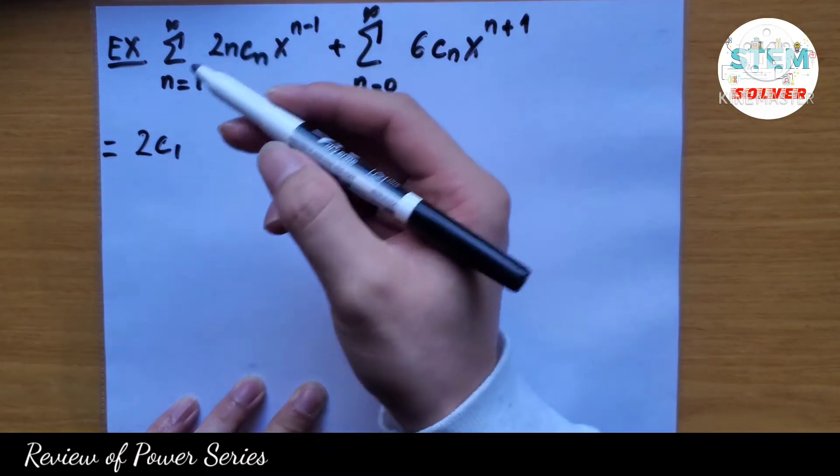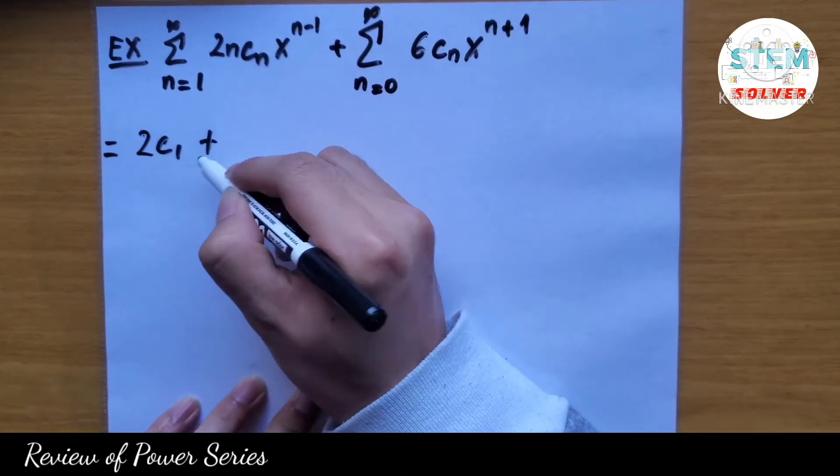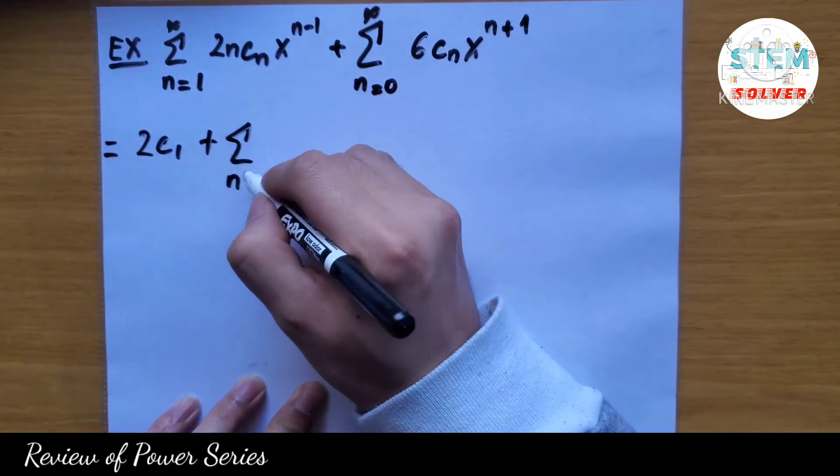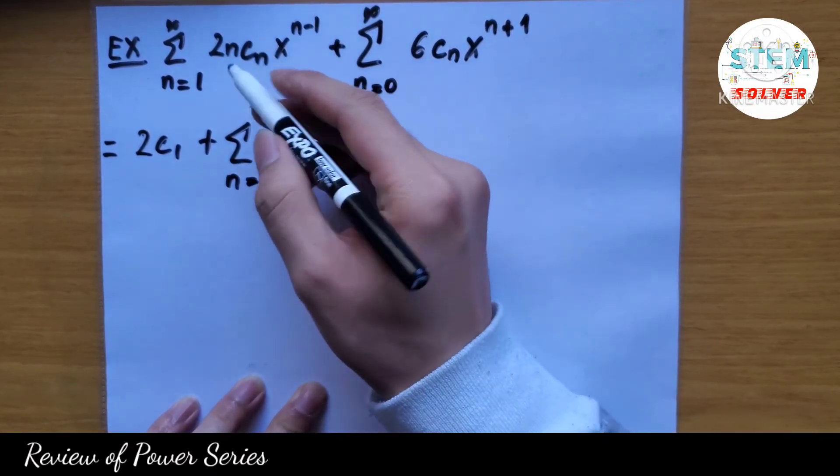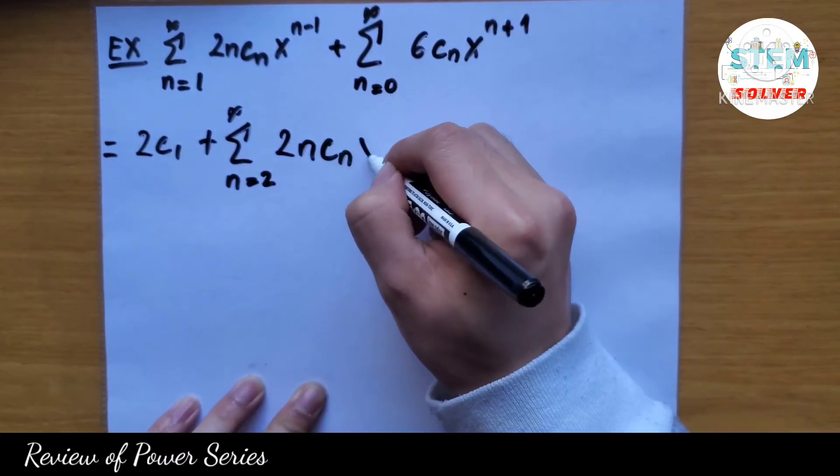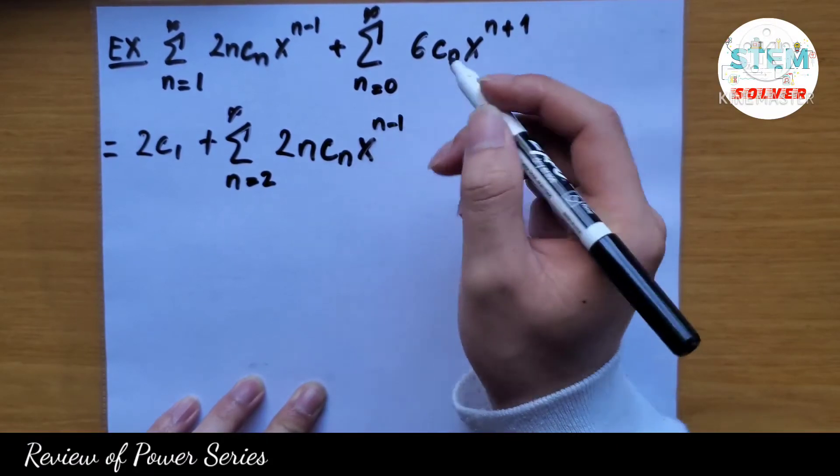Then plus series from n equal 2 to infinity, 2n cn x to the n minus 1.